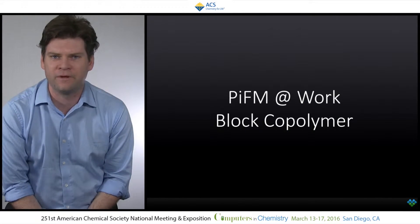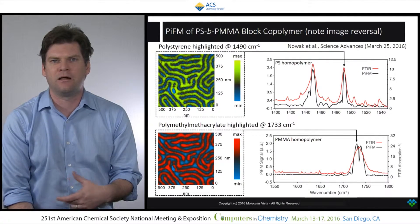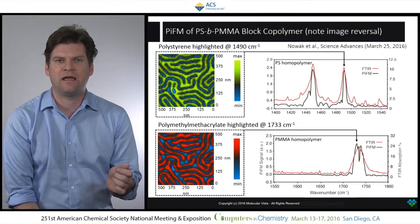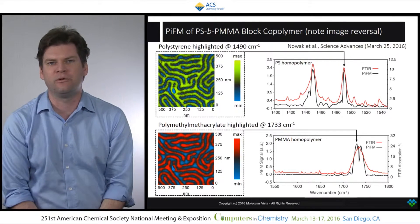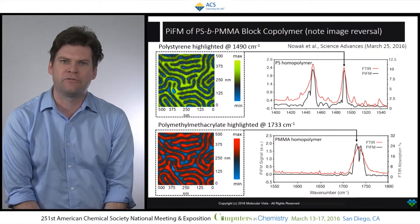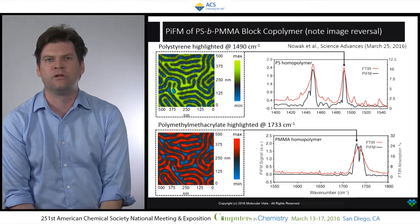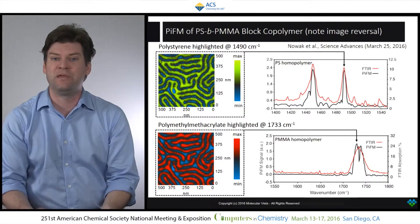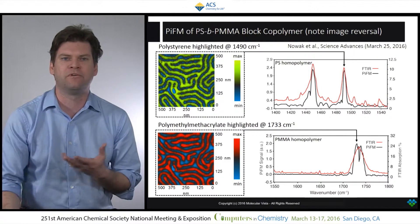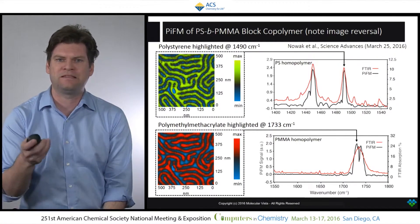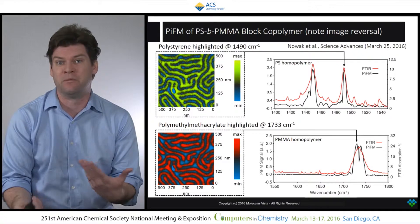We can take this one step farther and apply it to something real. We'll look at block copolymers — here a PS-PMMA assembly. We've highlighted polystyrene at 1,490 wavenumbers and you can see the PIFM-FTIR agreement in the spectra, along with the spatial resolution we're getting. We're able to resolve this 40 nanometer pitch block copolymer for its PS constituent. We can then change the laser to 1,733 wavenumbers and resolve the PMMA constituent as shown in red. There's a complete image reversal in terms of maximum signal, because we're chemically and selectively imaging one component versus the other — PS versus PMMA or PMMA versus PS.